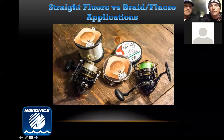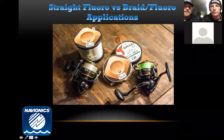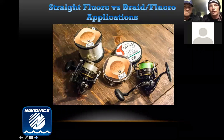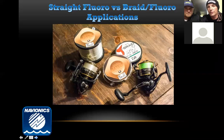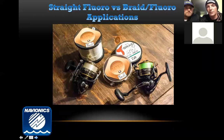Straight fluorocarbon versus braid — this is a big one. I've gone almost fully to the braid and fluorocarbon combo. One advantage: in real super cold weather, when we're fishing in air temperatures less than 37 degrees, that's where fluorocarbon really shines. Braid tends to freeze and the water sticks to the line. Before, I liked straight fluorocarbon for dropping vertically — it falls a lot nicer than braid — but now I've been tying such long leaders that I'm still using braid with a fluorocarbon leader.